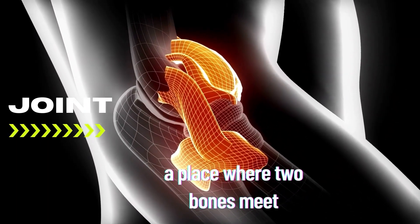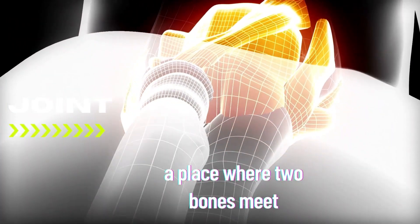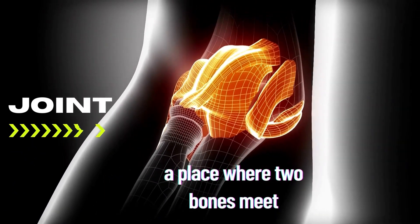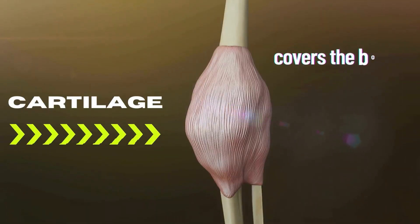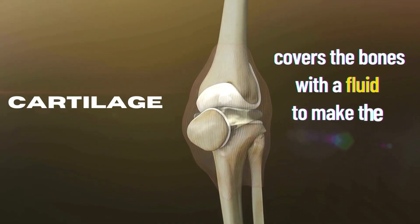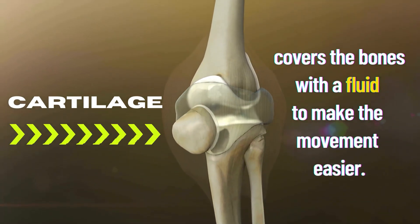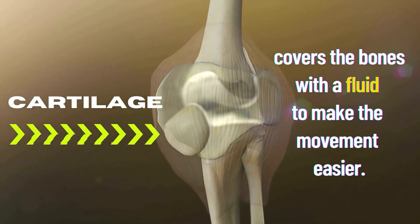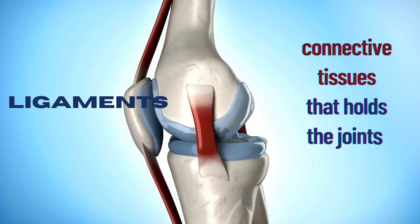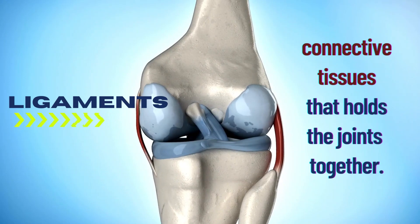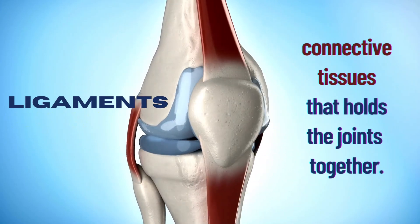The joint is a place where two bones meet, as in our elbow — this is the place where two bones meet. Meanwhile, the cartilage covers the bones with fluid to make movement easier. And we have the ligaments, which are connective tissues that hold the joints together. The red portion of the bone shown is the ligament.